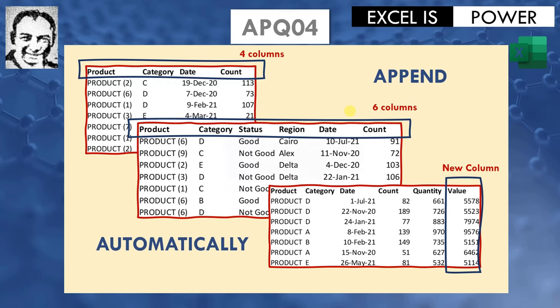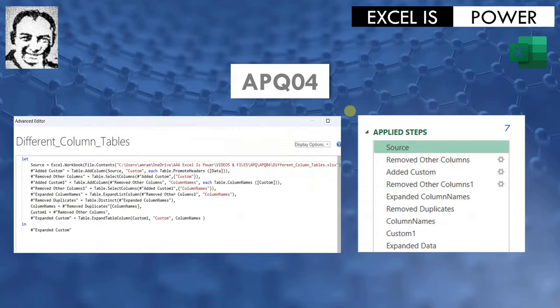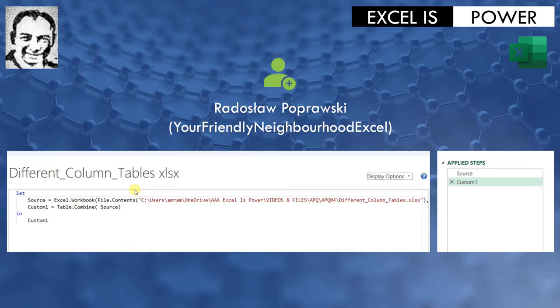We used some M code functions and built a query with seven applied steps, and when you extract the code you'll see it's relatively long and complicated. However, one of my friends, Rodsto Poprowski, sent me a message asking why I was overcomplicating things, and he sent me a solution of just two lines of code and only two applied steps. Let's go together and try the solution from our friend.